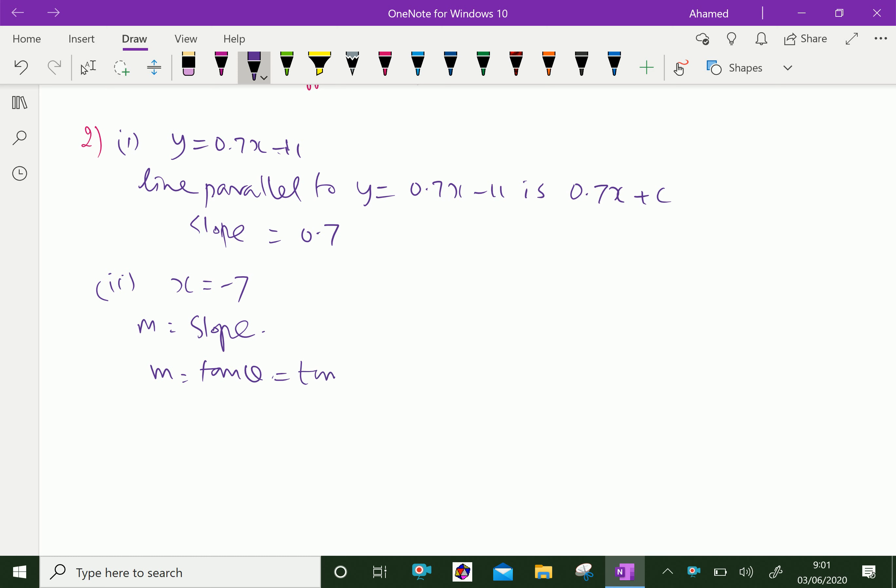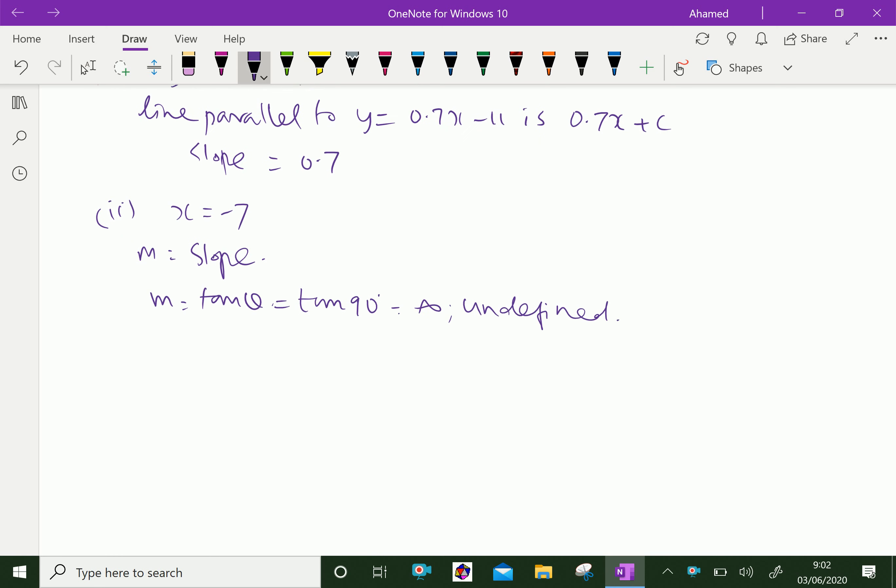...equals tan 90°, which equals infinity, which is undefined. The slope is undefined. Now, look at this. This is a coordinate system with x and y axes. Here, x = -7.